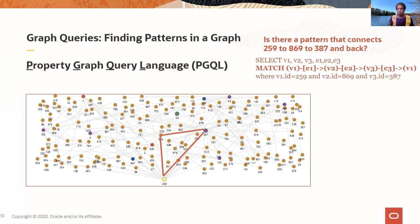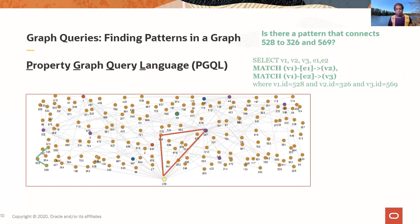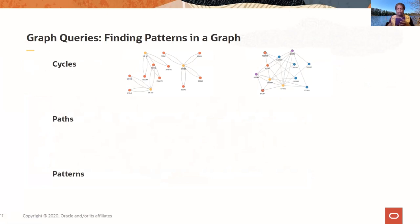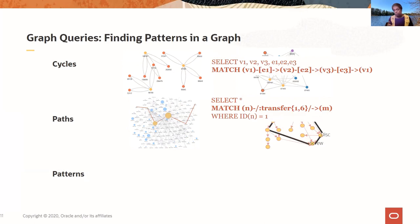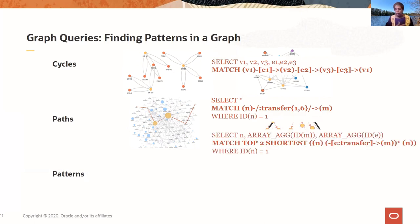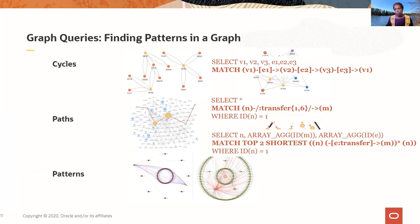Here is an example of a query that specifies a triangle in a graph. And here is another pattern where you're saying: I'm starting from node 528, and I want to see whether there are two cash transfers going in from this vertex. That's how you specify the query in the Property Graph Query Language. When you're looking for patterns in your graph, your patterns can be cycles, or paths — like whether there's a path between two nodes spanning one to six hops. You can also find the top two shortest paths, or specify more complex patterns using the graph query language.